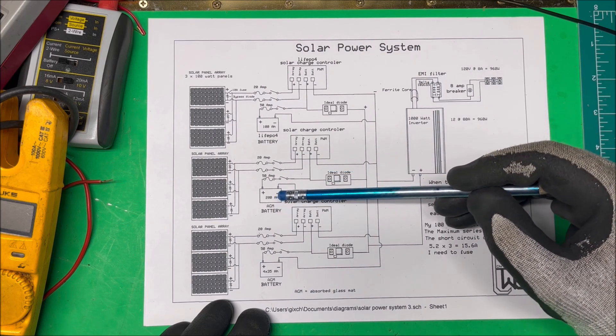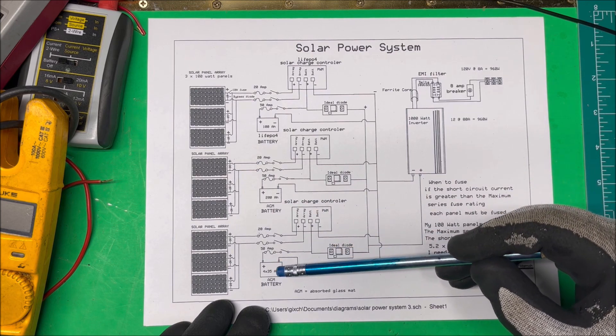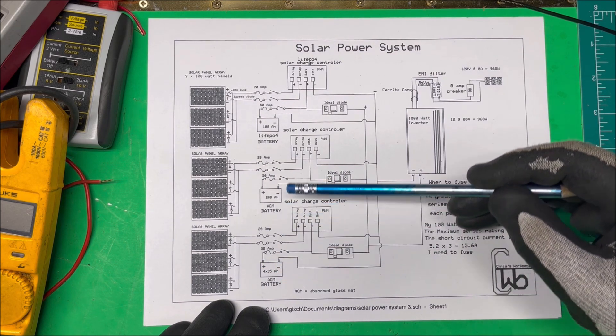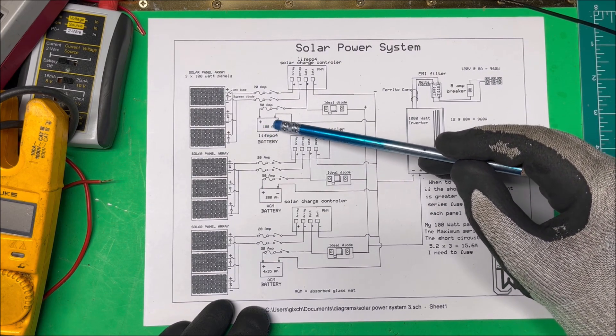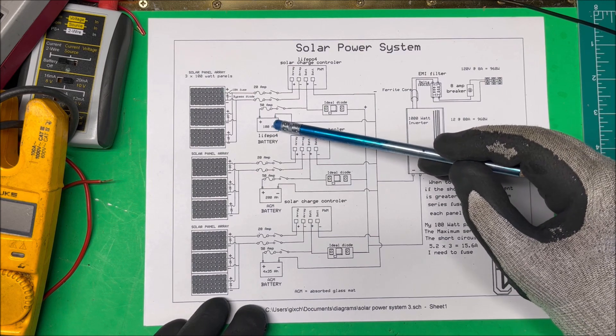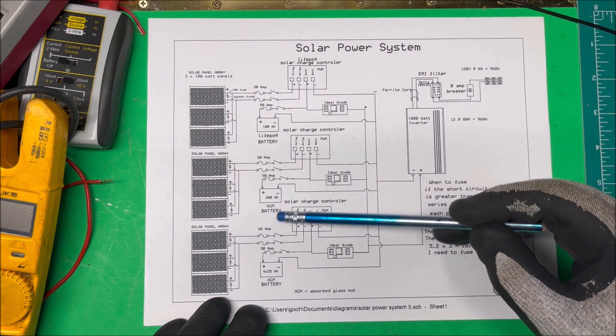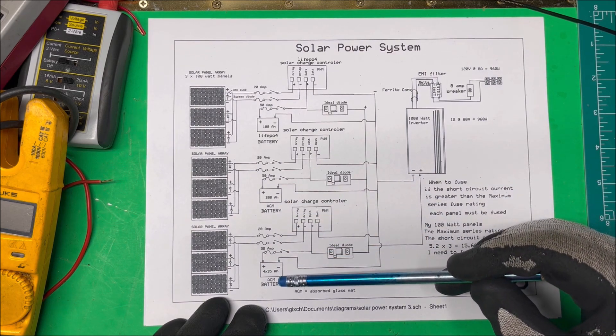This one's a 200 amp hour AGM battery. These are four 35 amp hour batteries that are in parallel, and I had a flooded lead-acid battery I changed out for a lithium iron phosphate battery. You can't combine different amp hours and different chemistries.